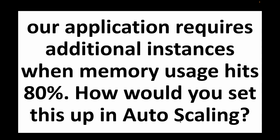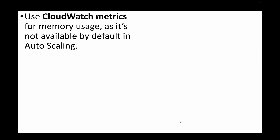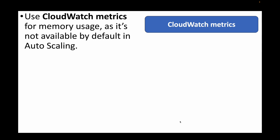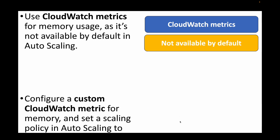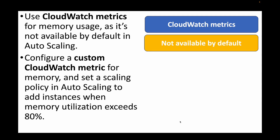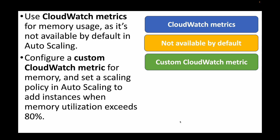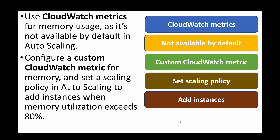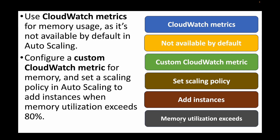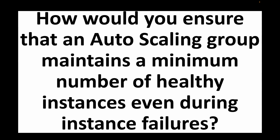The next question: our application requires additional instances when memory usage hits 80% — how would you set this up in auto scaling? By default, memory usage is not available as a CloudWatch metric, so we create a custom CloudWatch metric to monitor memory. We then set up an alarm with an action for the auto scaling group to launch instances whenever memory utilization exceeds 80%, triggering scale-out at that threshold.